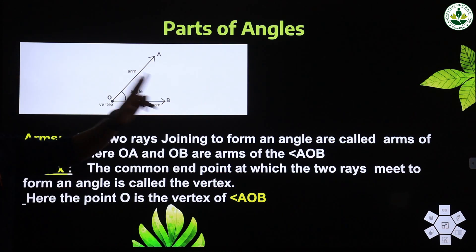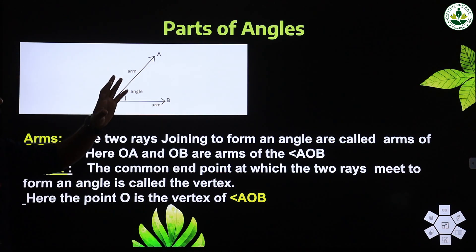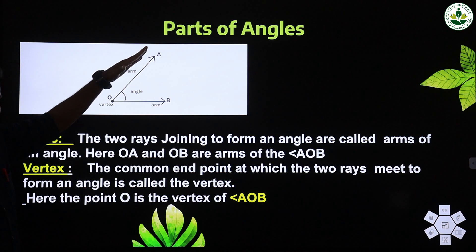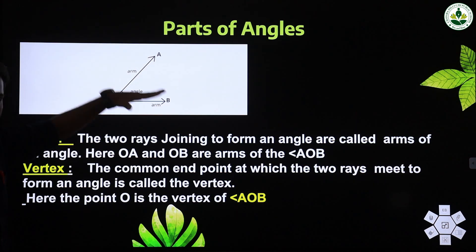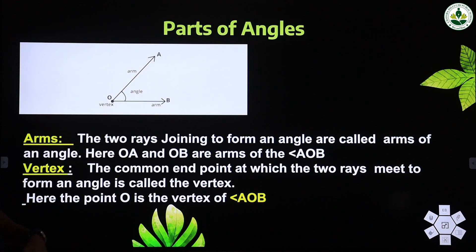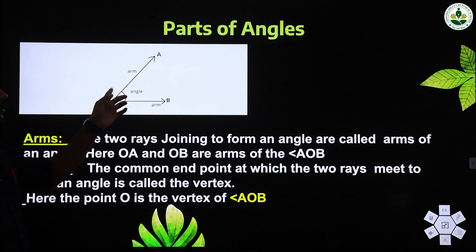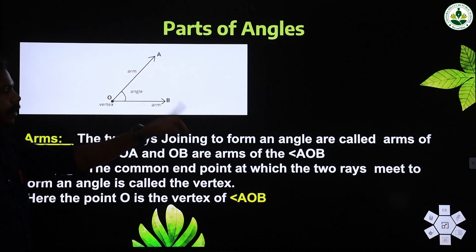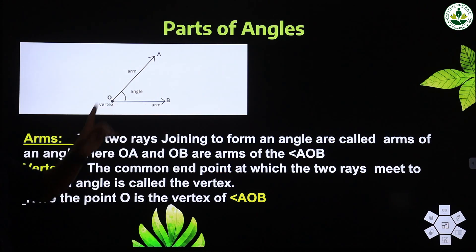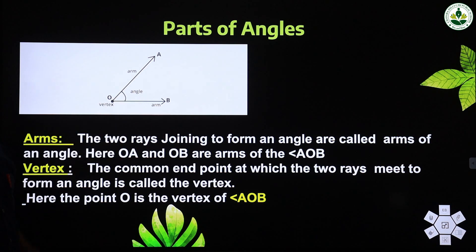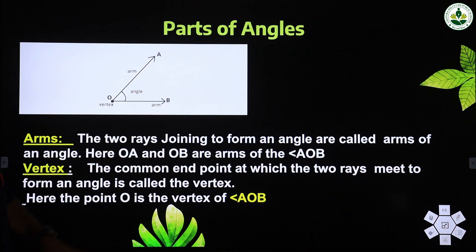So in an angle there are two main parts. The first is the arms — the rays are the arms. The second is the vertex — the intersecting point. Here the vertex is O and the arms are OA and OB. An angle has two arms, OA and OB, and one vertex.